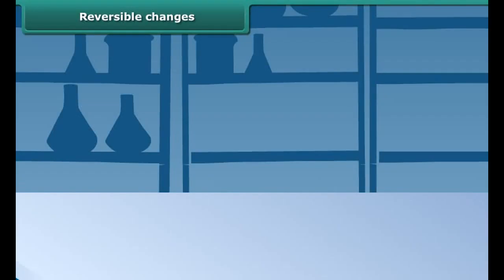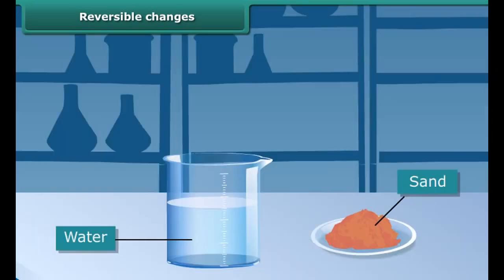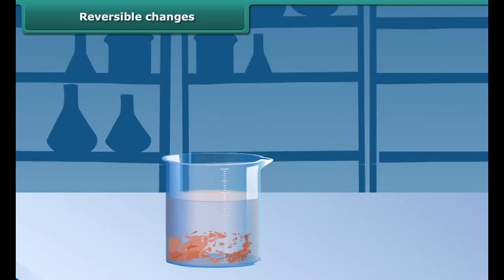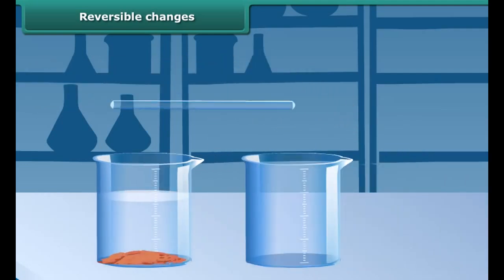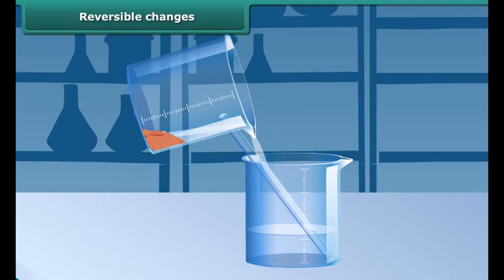Reversible changes. Changes are of two types: reversible and irreversible. Changes that can be reverted to their original state are reversible changes. Let's try this: take some sand and mix it in water. Would you be able to remove sand from water after they are mixed together?